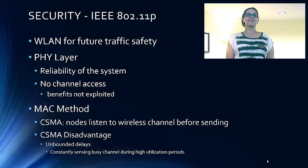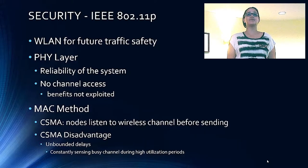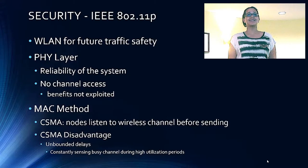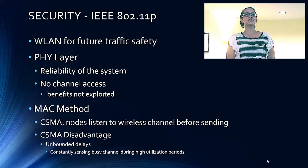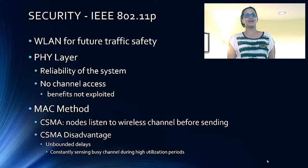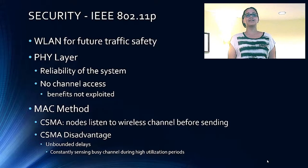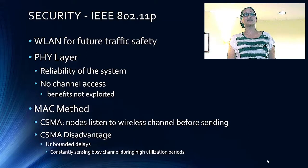Hi, I'm Kian and I'm going to be going into security. Although the new 802.11P standard aims to provide reliable wireless communication for vehicular environments and offers several improvements, weaknesses in 802.11P vehicular wireless networks could also make them targets for malicious attacks. IEEE 802.11P is considered a WLAN for future traffic safety systems. The physical layer in 802.11P affects the reliability of the system, and if we do not get channel access, the benefits of the physical layer cannot be exploited.